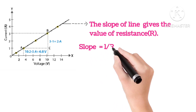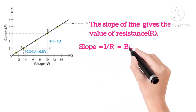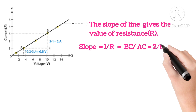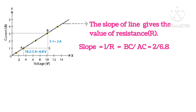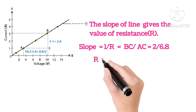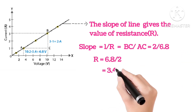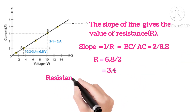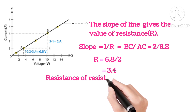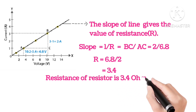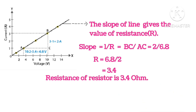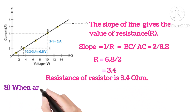The slope of line gives the value of resistance R. So the slope is 1 by R, that is BC upon AC, that is R equals 6.8 upon 2, that is resistance of the resistor is 3.4 ohms.